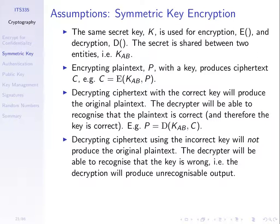Someone gives me ciphertext and I don't know the key. I try a key which is the wrong key. When I decrypt, we assume that the operation will produce something such that I can recognize that key didn't work — the plaintext is wrong. That is, we'll be able to recognize the correct plaintext.